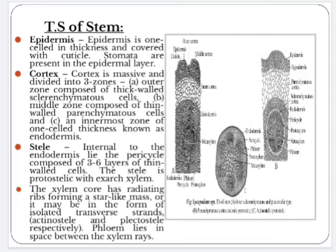Cortex is massive and divided into three zones: outer zone, middle zone and innermost zone. The outer zone is composed of thick-walled sclerenchymatous cells. The middle zone is composed of thin-walled parenchymatous cells. The innermost zone consists of a single cell layer in thickness known as endodermis.